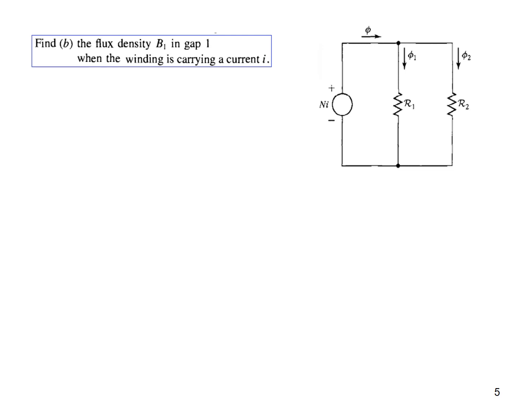Now we come to the part B. We have to find the flux density B1 in gap one, so this is this part for gap one where we have the flux phi_1.